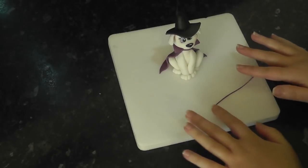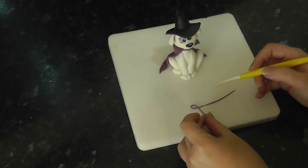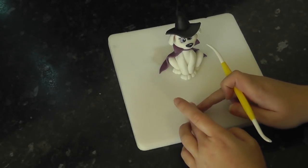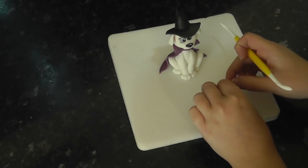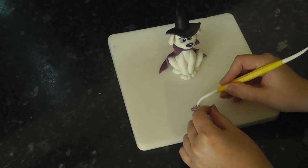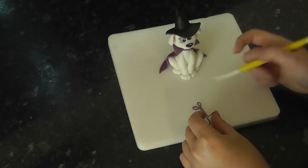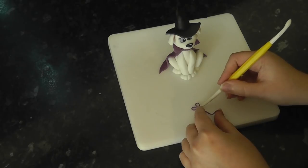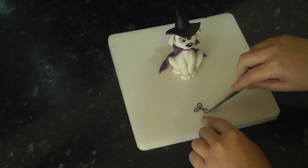For the bow, roll out another string and create two loops by looping the paste over itself. Press the middle to adhere it and cut the tails to the desired length.